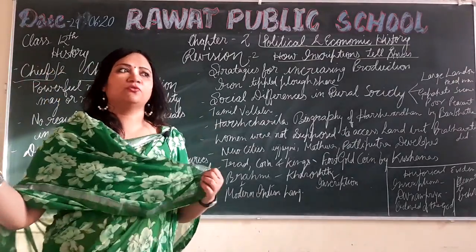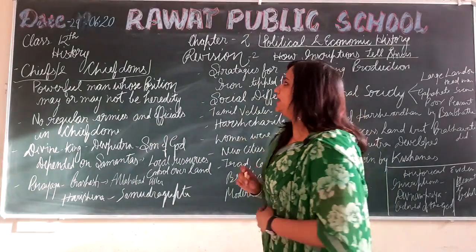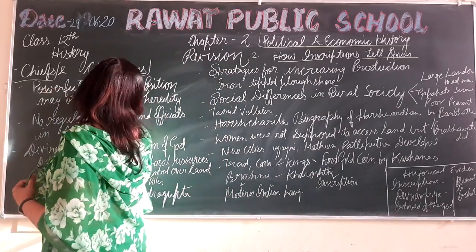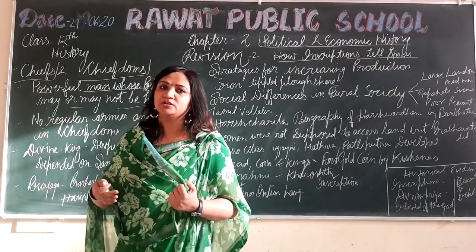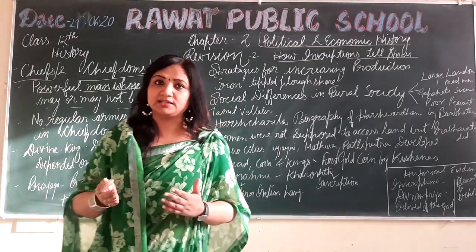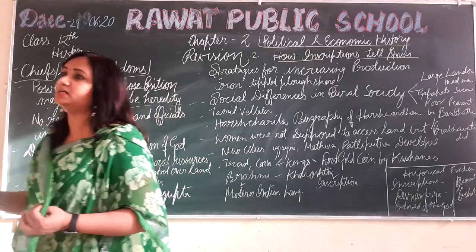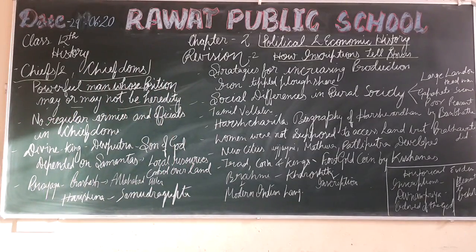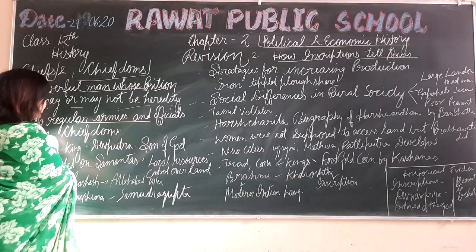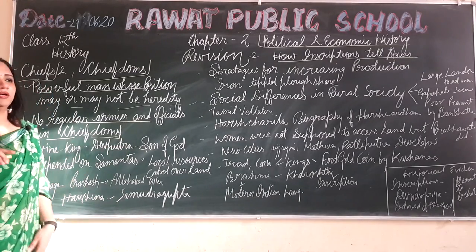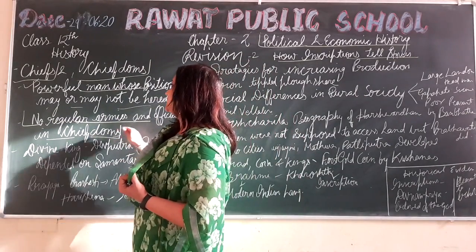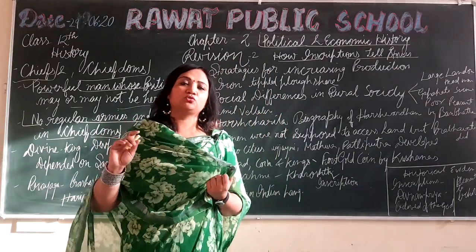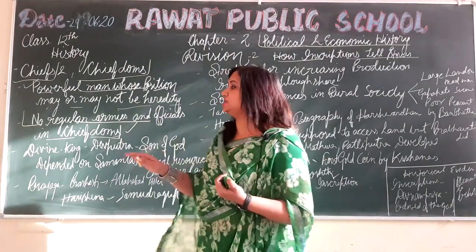Chiefs are the leaders of chiefdoms, which is the area they lead. Who was a chief? A chief was a powerful man whose position may or may not be hereditary. He was a powerful person. There was no regular army, no officials in the chiefdoms — just the area where he was the leader. So chiefs were powerful men leading over a particular area.